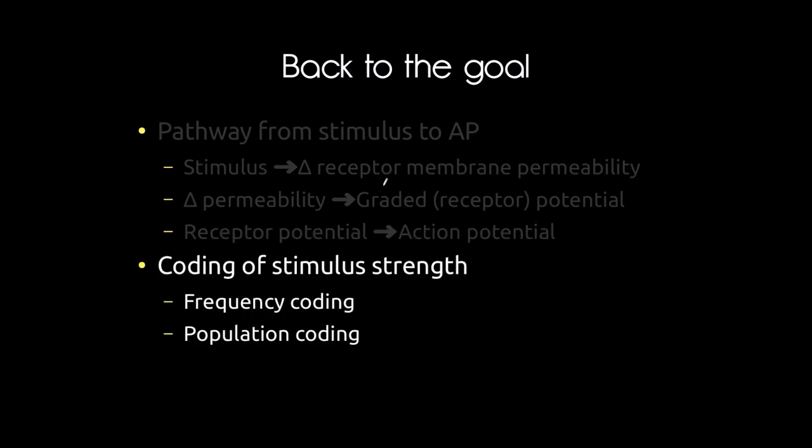These stimuli, when converted to action potentials, can be coded in several ways. Stimuli are analog signals — continuous in magnitude — whereas action potentials are all-or-nothing. So you need to encode stimulus magnitude using action potentials. Frequency coding means a greater stimulus causes a greater frequency of action potentials — more per unit time. Population coding means a greater stimulus causes more receptors to fire action potentials, producing more action potentials in physical space.